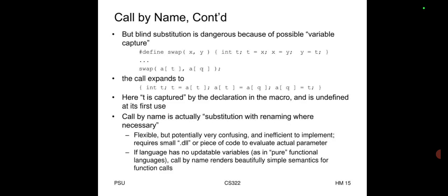Call by name uses substitution, but blind substitution is dangerous because of possible variable capture — a variable 't' can be captured by a declaration in the macro and is undefined at its first use. Call by name is actually substitution with renaming where necessary. It is flexible but potentially very confusing and inefficient to implement, requiring a small piece of code (thunk) to evaluate the actual parameter. If the language has no updatable variables (as in pure functional languages), call by name yields beautifully lazy evaluation semantics.